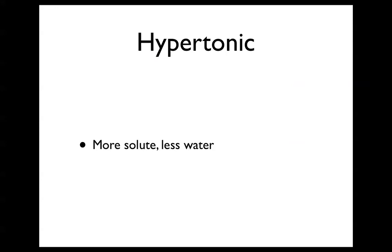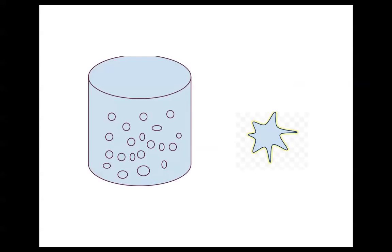Secondly, hypertonic solution has more solute and less water. This is how it looks. As you can see, it has more solute than the isotonic solution, and the problem is that the cell loses water, so it shrivels and eventually dies.